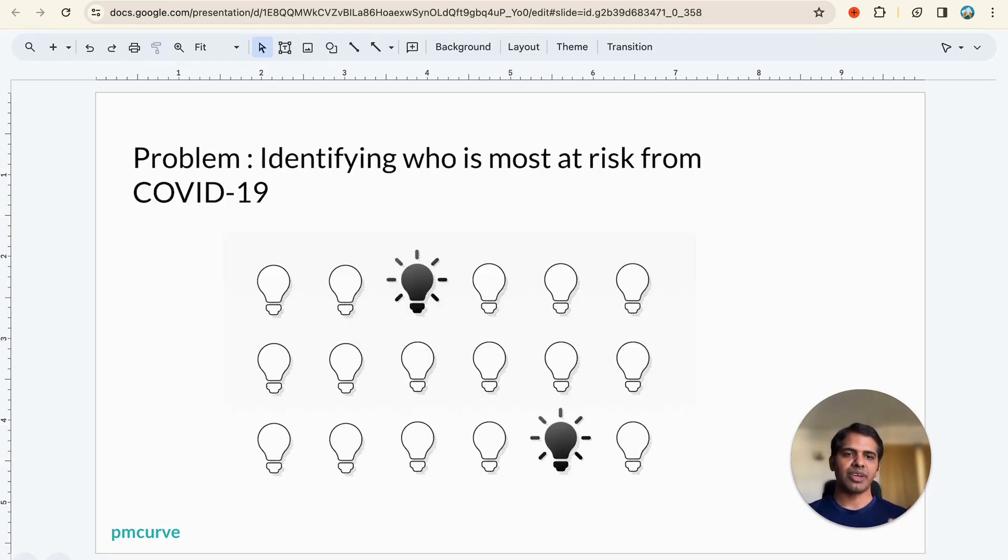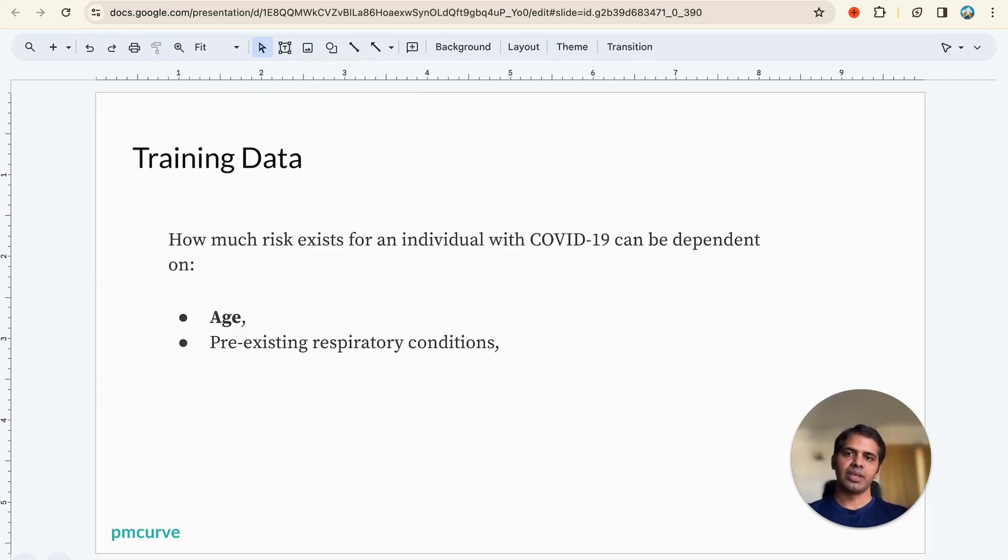Let's take the problem of identifying who is most at risk from COVID-19. We want to assess who are the people who can get severely impacted by COVID. The training data to map the risk for an individual from COVID-19, we need historical data around age, pre-existing respiratory conditions and few more information. This data can come from hospitals, governments, and this will create the training set.